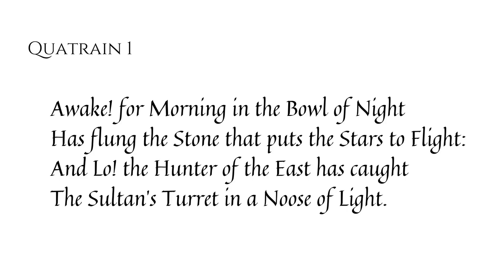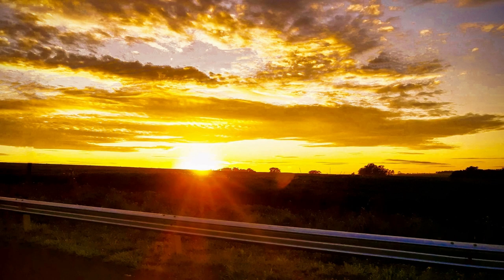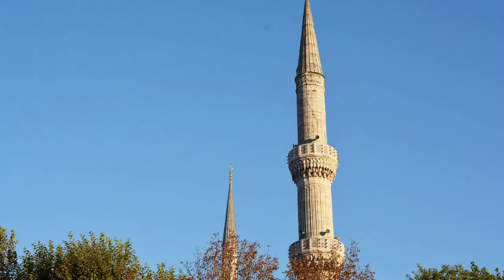Awake! For morning in the bowl of night has flung the stone that puts the stars to flight. And lo! The hunter of the east has caught the sultan's turret in a noose of light. The first quatrain talks about how the sun ushers in the morning. Two metaphors are used here to refer to the sun: the stone that puts the stars to flight, and the hunter of the east. The sun makes the stars disappear from view. Also, the sun is like a hunter in that it catches everything in its light. The phrase 'caught the sultan's turret in a noose of light' refers to the fact that the turret of the sultan's palace or place of worship is the tallest object in their community and is therefore the first thing that the sun illuminates as it rises from the east.